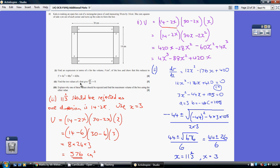Find the two values of x that give dv/dx equals 0. So we need to differentiate this. Remember we're multiplying by the current power and reducing the power by 1. Multiplying by 2, power becomes 1 and this becomes 420. So this is dv/dx which we set equal to 0.